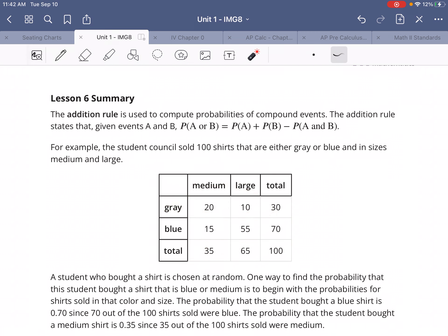The way that the rule works is we find the probability of the first thing, add that to the probability of the second thing, and then take away the probability of both of those things.